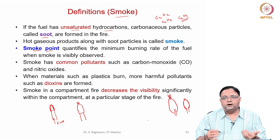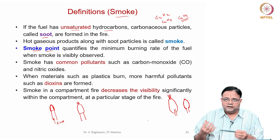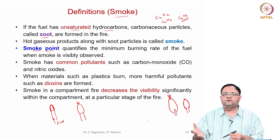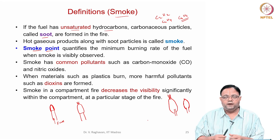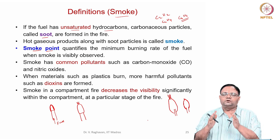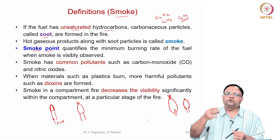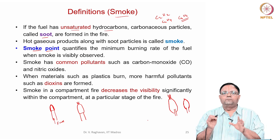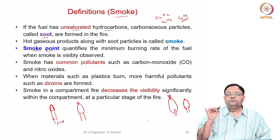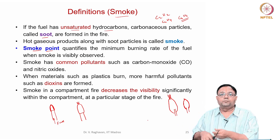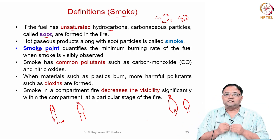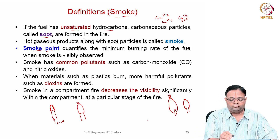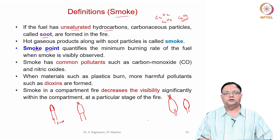For any fuel, if you try to burn it faster and faster in a diffusion or non-premix mode, the oxygen available for gas phase reactions will be approximately stoichiometric, but the excess oxygen required for soot oxidation will not be available. So the soot particles leave the flame zone at the tip, causing visible smoke at the tip of the flame. Such a minimum flow rate at which this phenomenon is observed is called the smoke point, and this is characterized for several fuels.